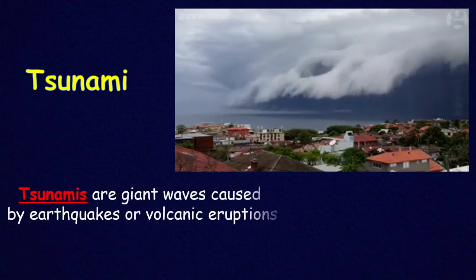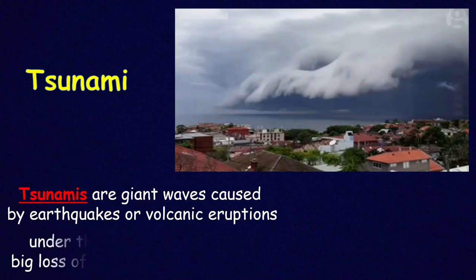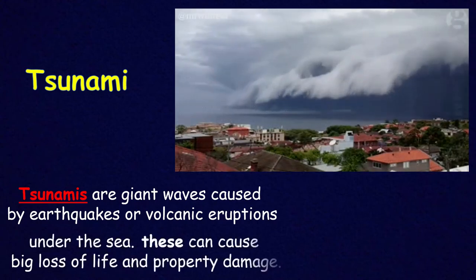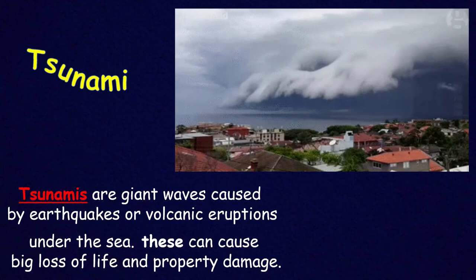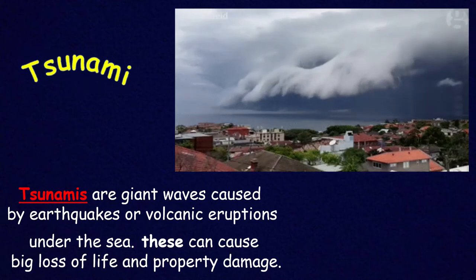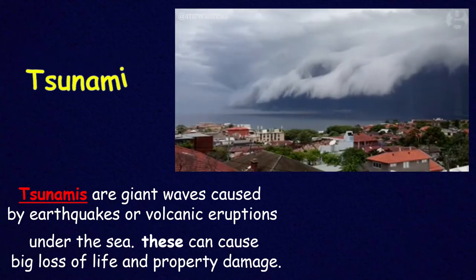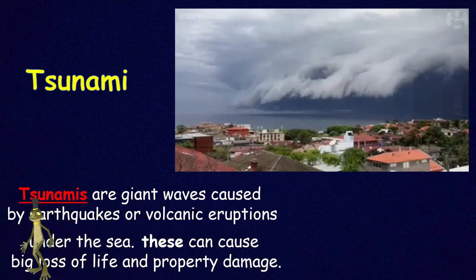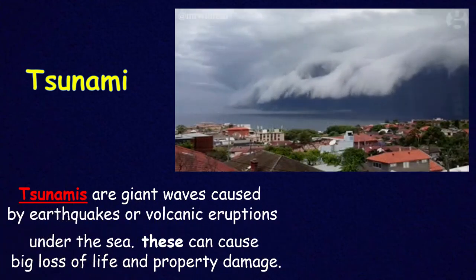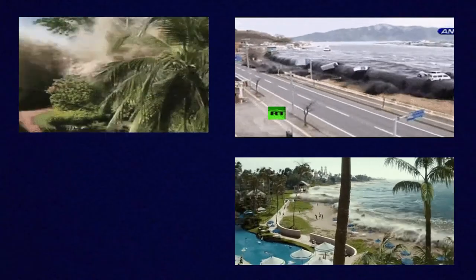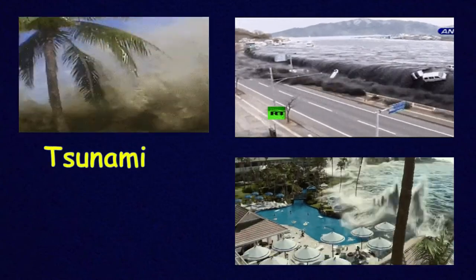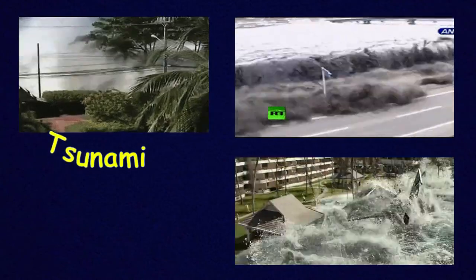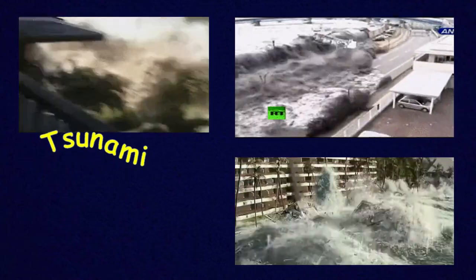Tsunamis are giant waves caused by earthquakes or volcanic eruptions under the sea. This can cause a big loss of life and property damage too. If you see one, just run — you cannot even hide, just keep running.